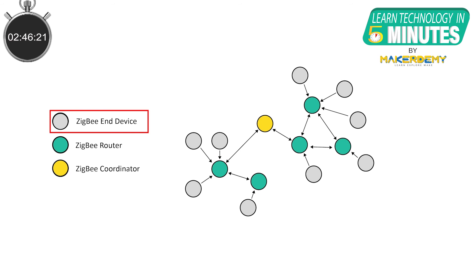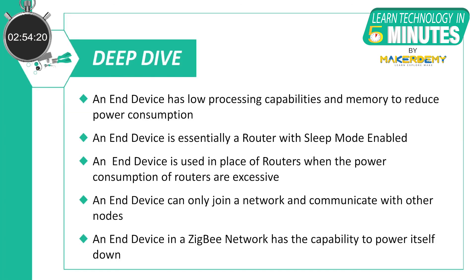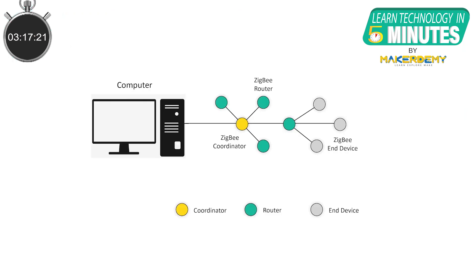Finally, an end device, as its name suggests, signifies the termination or endpoint of a Zigbee network. These devices need to work with very constrained resources to reduce power consumption. End devices are essentially stripped-down versions of routers, used in situations where the hardware and full-time power of a router are excessive. They can join networks and send and receive information — nothing more. They can also power themselves down to save energy, and they need a coordinator or a router as a parent device to help join the network and store messages for them when they are asleep.